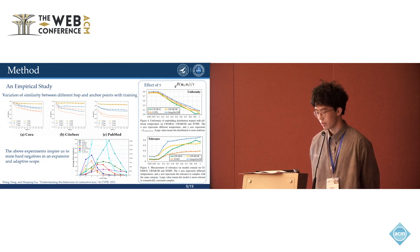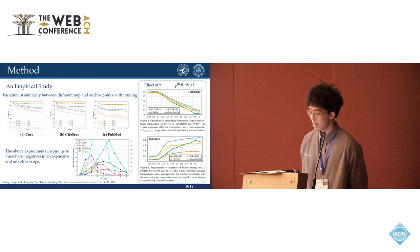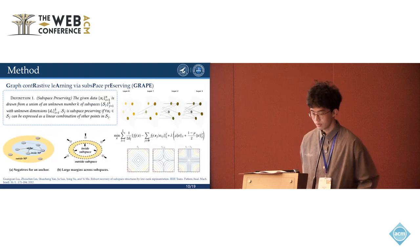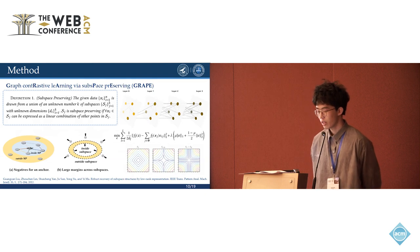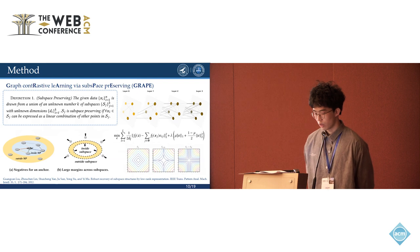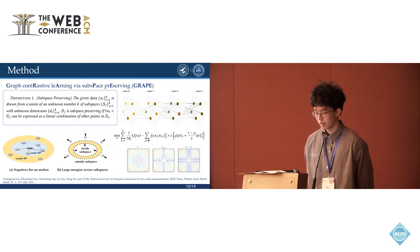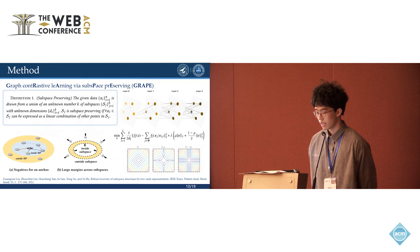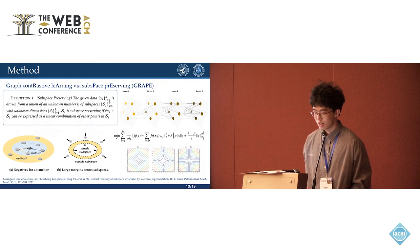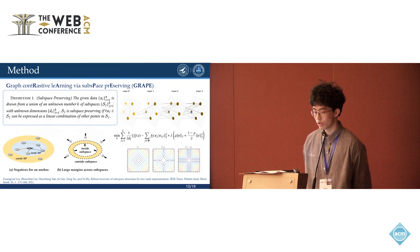The above two experiments inspire us to mine hard-negatives in an expansive and adaptive scope. Our method is simply called GRAPE. Beyond graph, hopefully, we employ subspace-preserving techniques to remedy this issue. The principle behind it is to mine hard-negatives across the entire subspace, rather than limiting it into the neighbors based on graph structures.